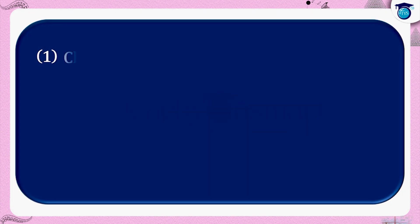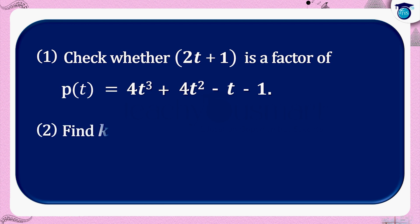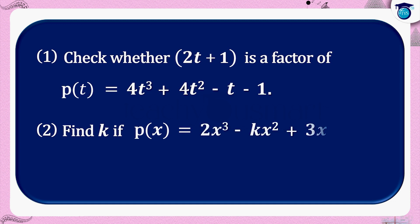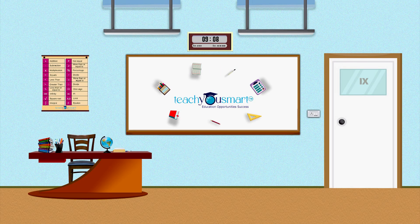Activity: 1. Check whether (2t + 1) is a factor of p(t) = 4t³ + 4t² − t − 1. 2. Find the value of k if p(x) = 2x³ − kx² + 3x + 10 is exactly divisible by (x + 2). That's all for now — see you all in the next class.